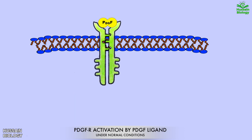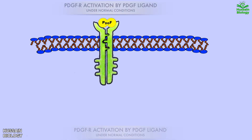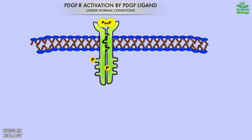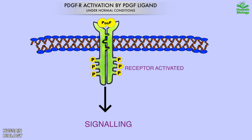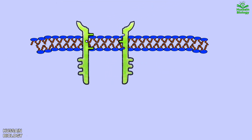This mediates receptor dimerization when both monomers come into close proximity. After dimerization, we get cross-phosphorylation of the kinase domains on the PDGFR receptor, and by this mechanism we get activation of the PDGFR receptor. From here, many different signaling pathways are initiated within the cell, and after signaling is completed, it is stopped at the receptor level.